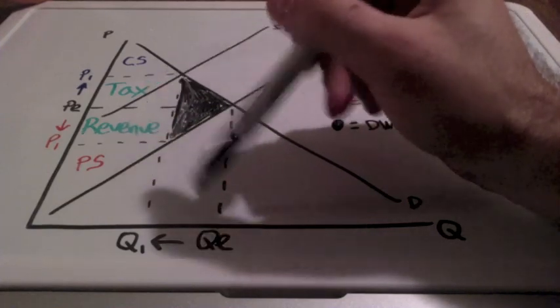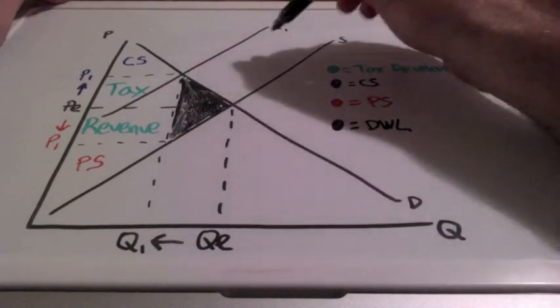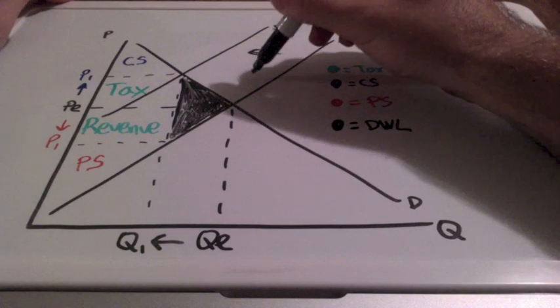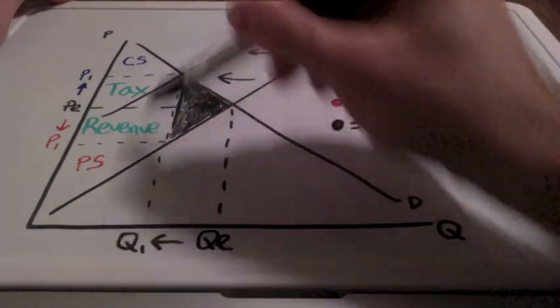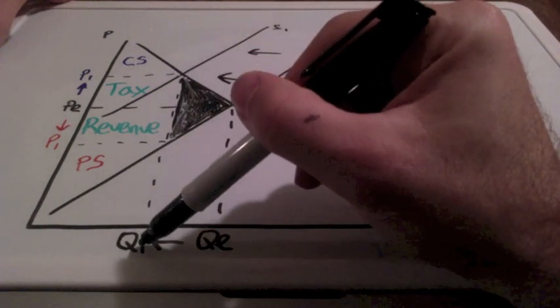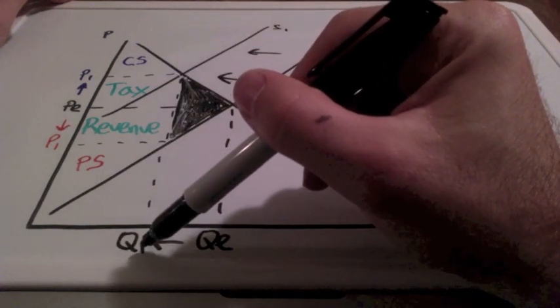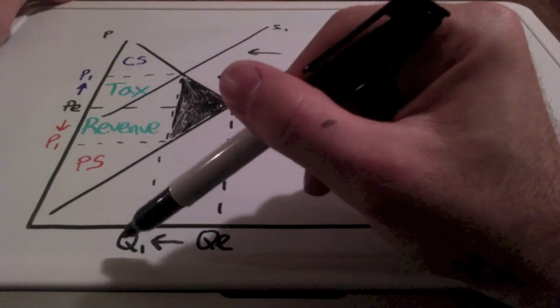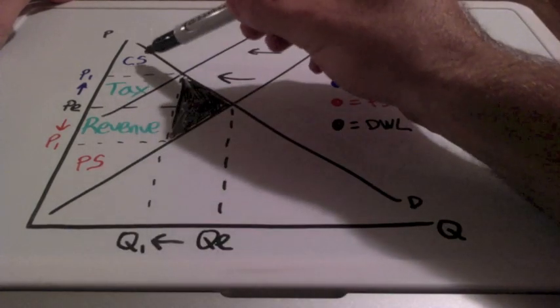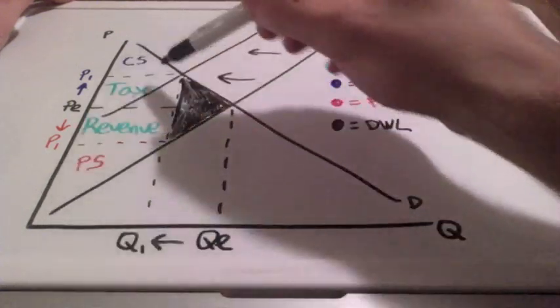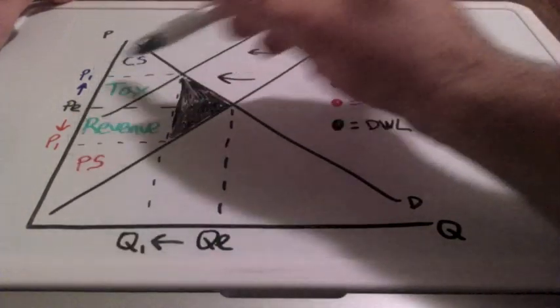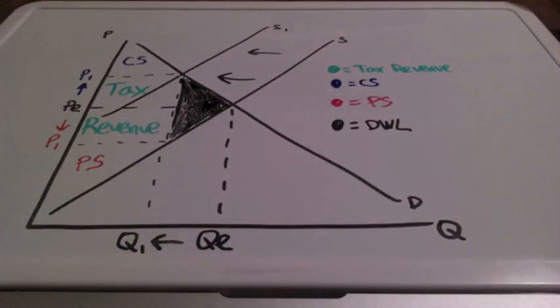As you can see, when we have a leftward shift in supply as a result of this tax, quantity demanded goes down, and quantity supplied goes down as well, resulting in a decrease in consumer surplus, and a decrease in producer surplus, and the government gets a big chunk of change in tax revenue from both consumers and producers.